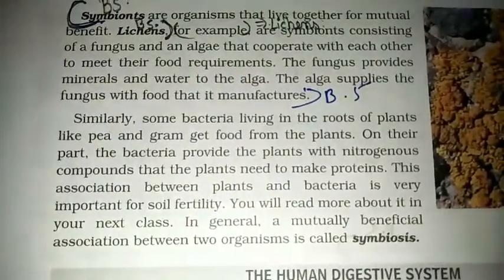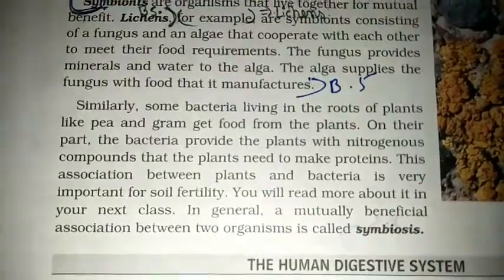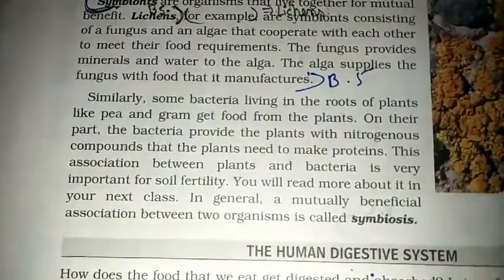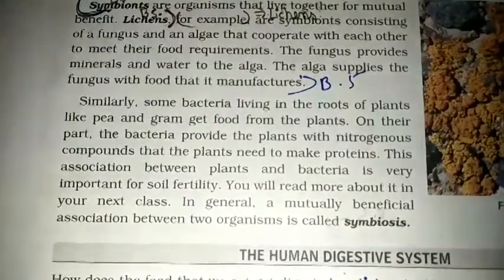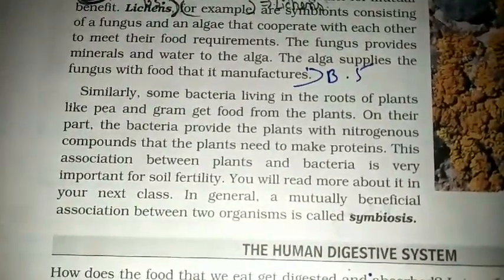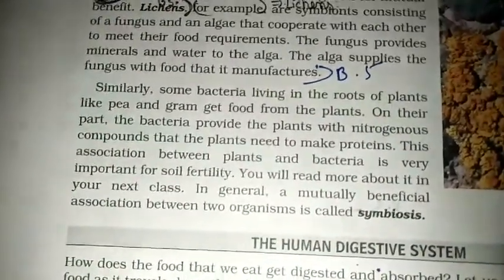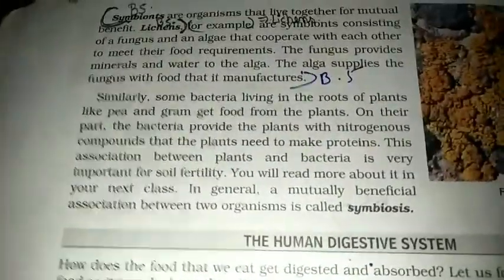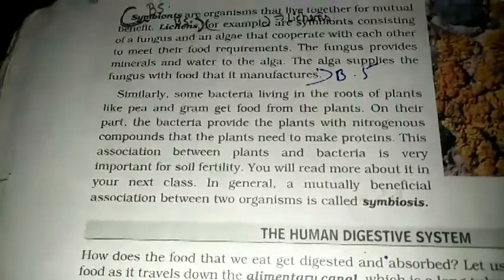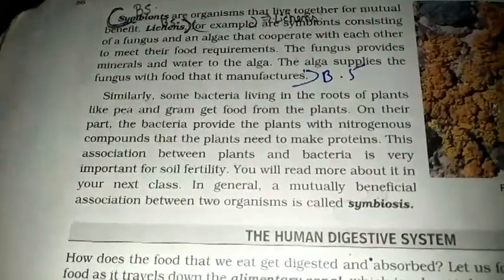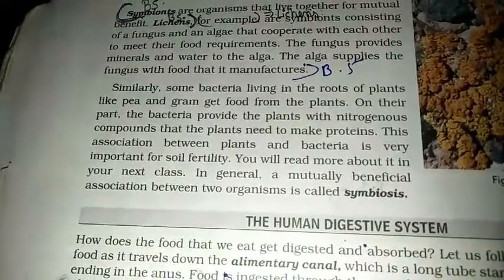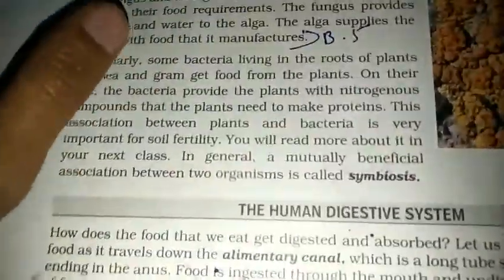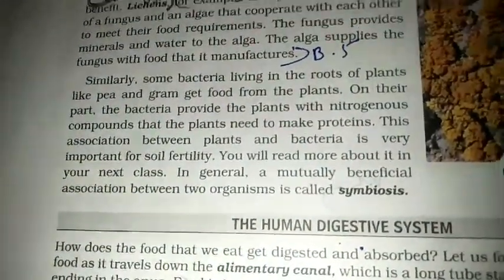Some bacteria also live on the roots of plants like pea and gram, and get food from the plants. Some bacteria also help in making nitrogenous compounds into proteins for the plant. Some bacteria are useful and some are harmful — for example, Lactobacillus bacteria helps in converting milk into curd, so they are useful for us. This process by which symbionts synthesize food is called symbiosis.